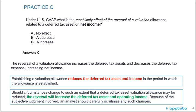Just as a little review, establishing a valuation allowance — when it's established — reduces the deferred tax asset and income in the period in which the allowance is established. Should circumstances change to such an extent that the deferred tax asset valuation allowance may be reduced or reversed, the reversal will increase the deferred tax asset and operating income. That's the last slide for this LOS. Thank you.